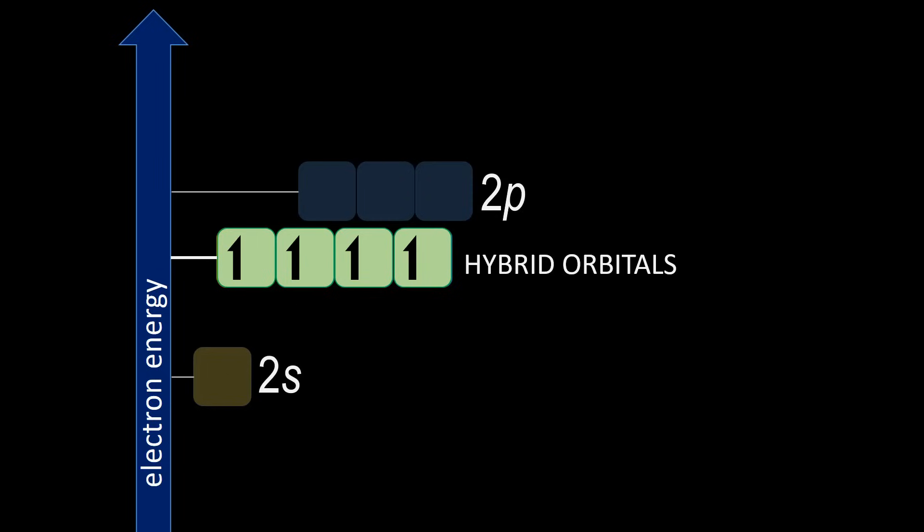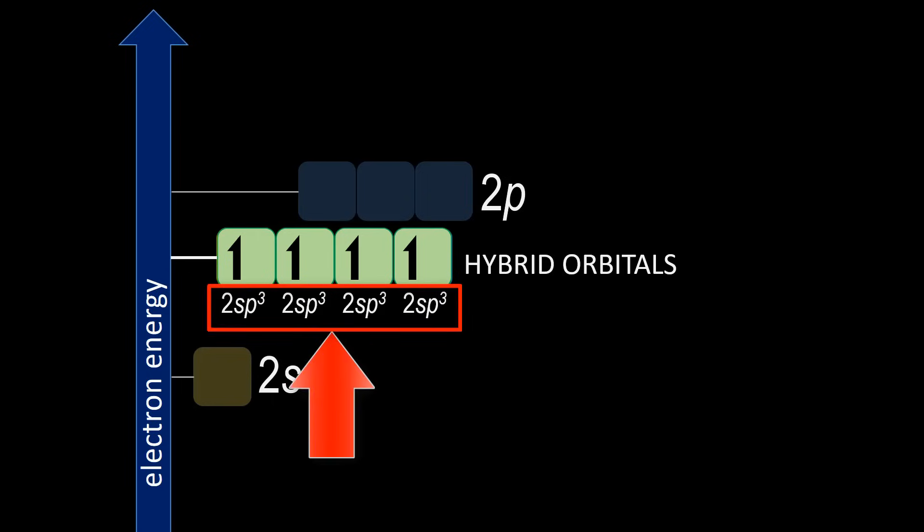And since the energies of these electrons have now changed, the shape of the orbitals they occupy are different as well, which we will see momentarily, and those are called hybrid orbitals. They are named 2sp3 hybrid orbitals. The naming often trips up students, so before we go any further, let's take a look at where the 2sp3 name comes from.